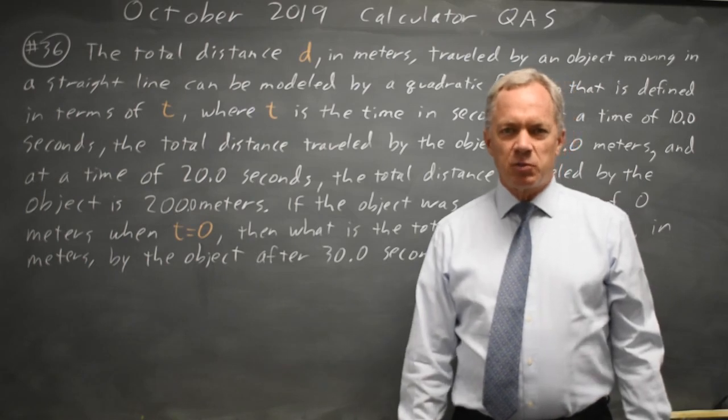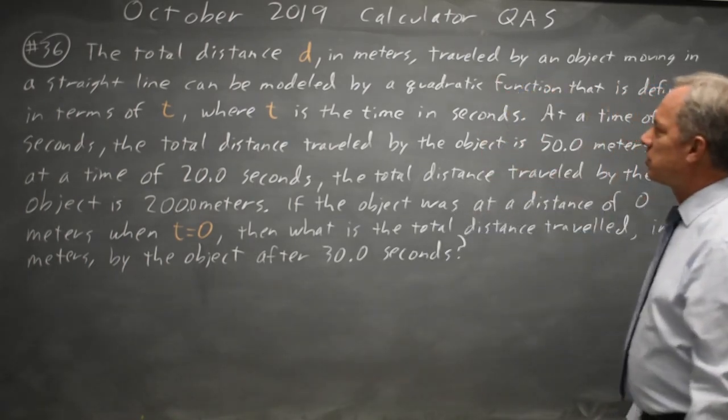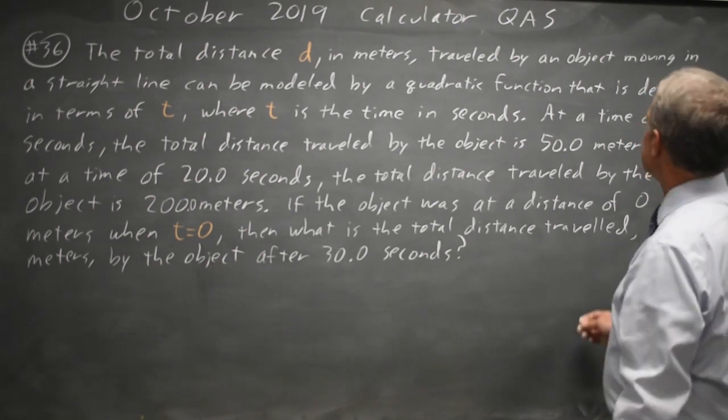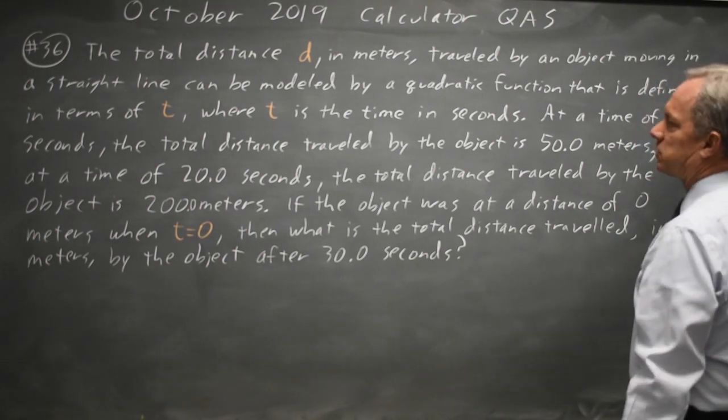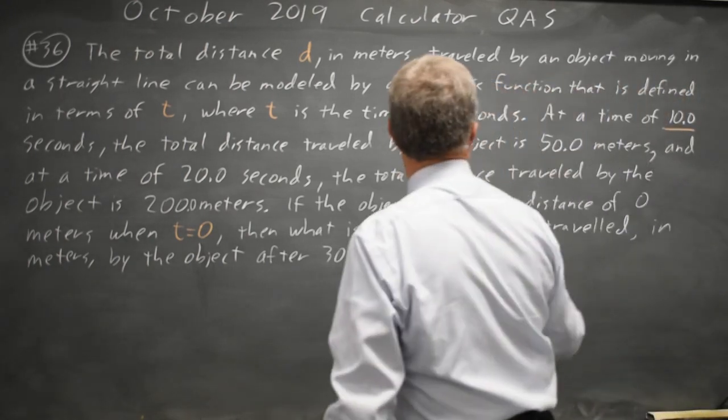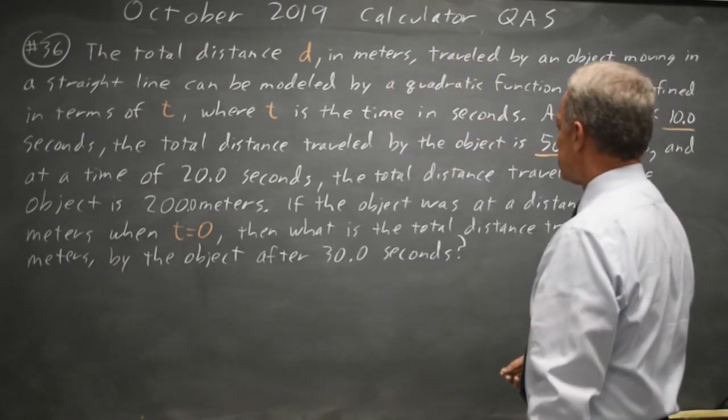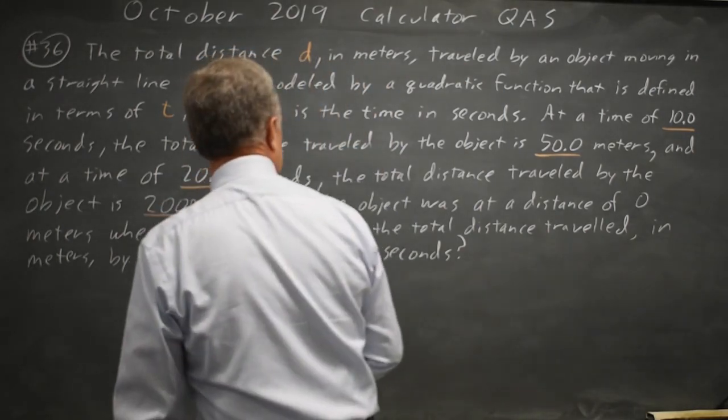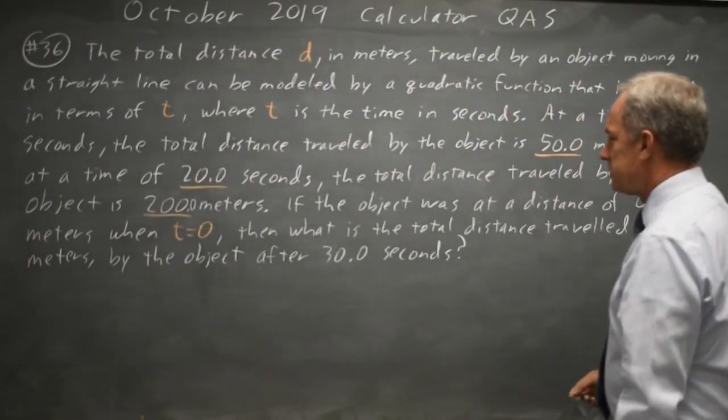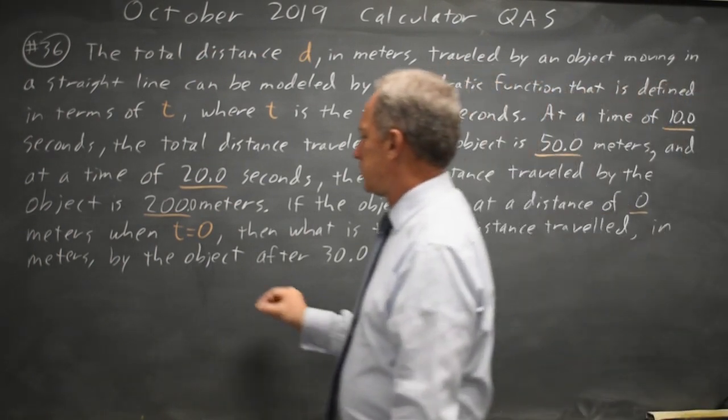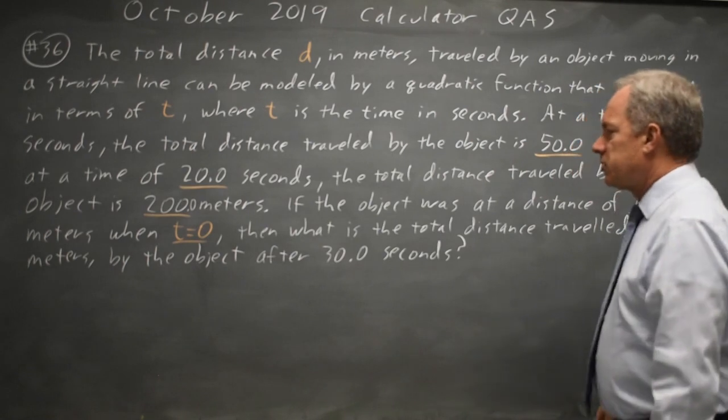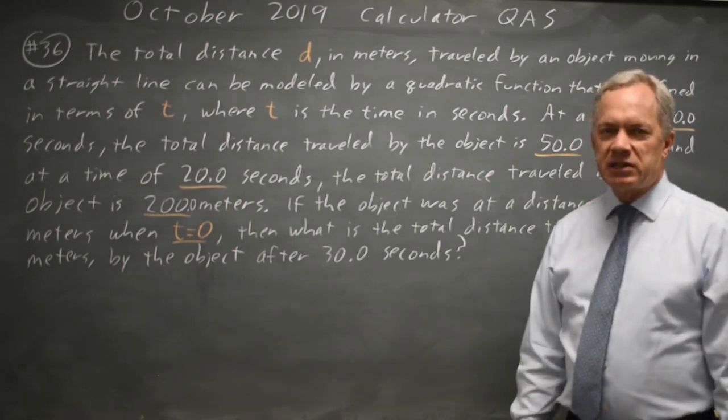This is question 36. College Board tells us we have a quadratic model for distance traveled and gives us three positions. At 10 seconds, we're 50 meters. At 20 seconds, we're 200 meters. And at 0 seconds, we're 0 meters. And they ask for the total distance traveled by 30 seconds.